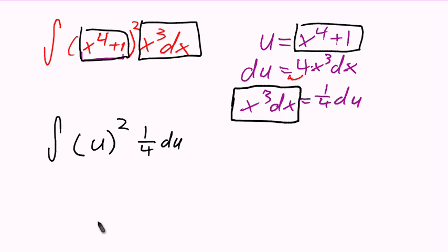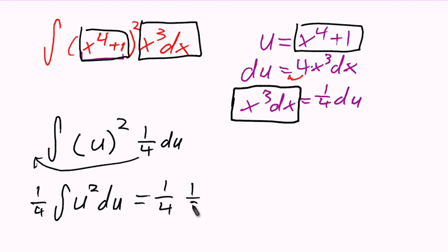We do a straight substitution there too to give us u squared. We'll draw the 4th out to the outside to give us 1 4th the integral of u squared du. Now we'll apply the power rule to give us 1 3rd u to the 3rd. This simplifies to 1 12th u to the 3rd plus c.